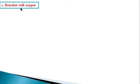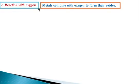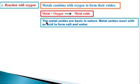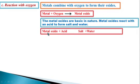Reaction with oxygen: metals combine with oxygen to form their oxides. The equation is: metal + oxygen → metal oxide. The metal oxides are basic in nature. Metal oxide reacts with an acid to form a salt and water: metal oxide + acid → salt + water.